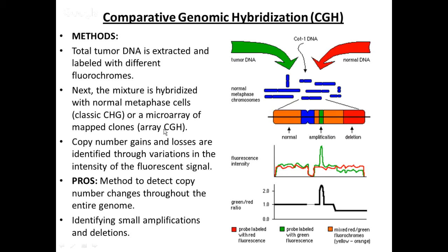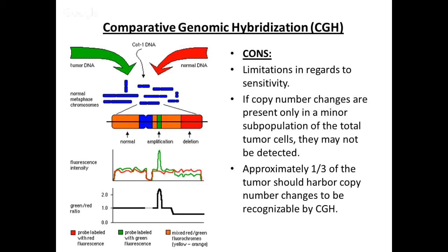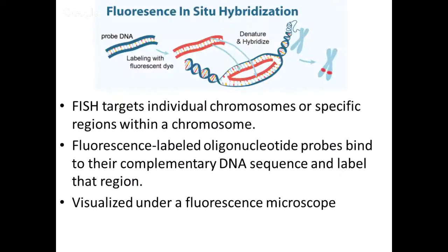The pros of CGH: it's an excellent method for detecting copy number changes throughout the entire genome and is really good at identifying small amplifications and deletions. The problems: it has limited sensitivity — if copy number changes are present in only a minor subpopulation of the total tumor, they may not be detected. This is a problem with heterogeneous tumors like melanoma. You basically need about a third of the tumor to harbor the copy number change to be recognizable by CGH. Also, you don't have spatial representation of which areas harbor those chromosomal abnormalities.